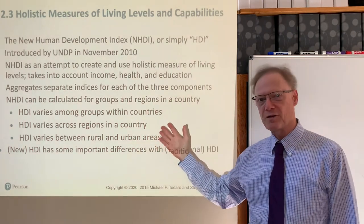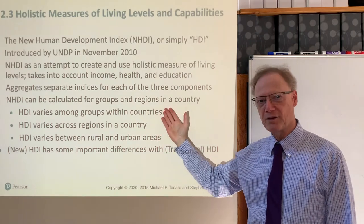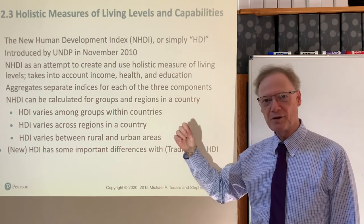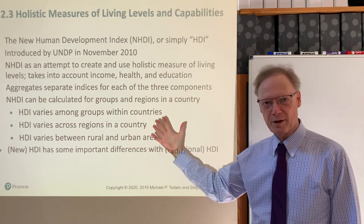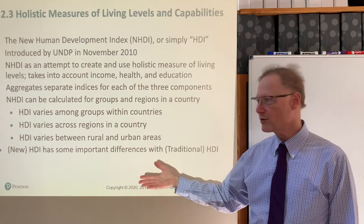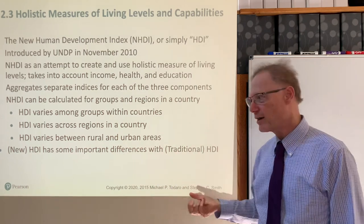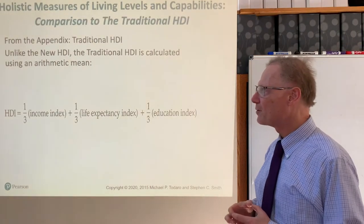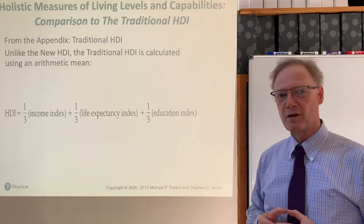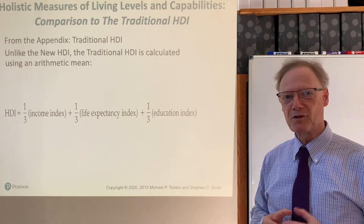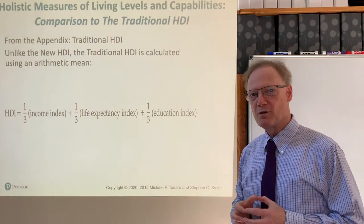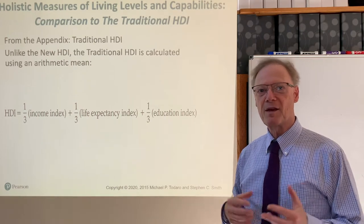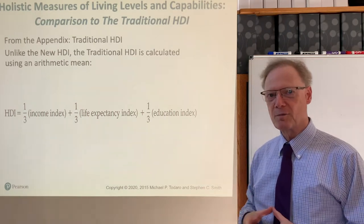You can also look at variations so that you don't have to look at the HDI for the country as a whole — you can look at the HDI of majority ethnic groups and minority ethnic groups within a country, for example, and I'll have a couple of examples of that. There are a couple of important differences from the old Human Development Index, which took the arithmetic mean. The new, current one takes the geometric mean.